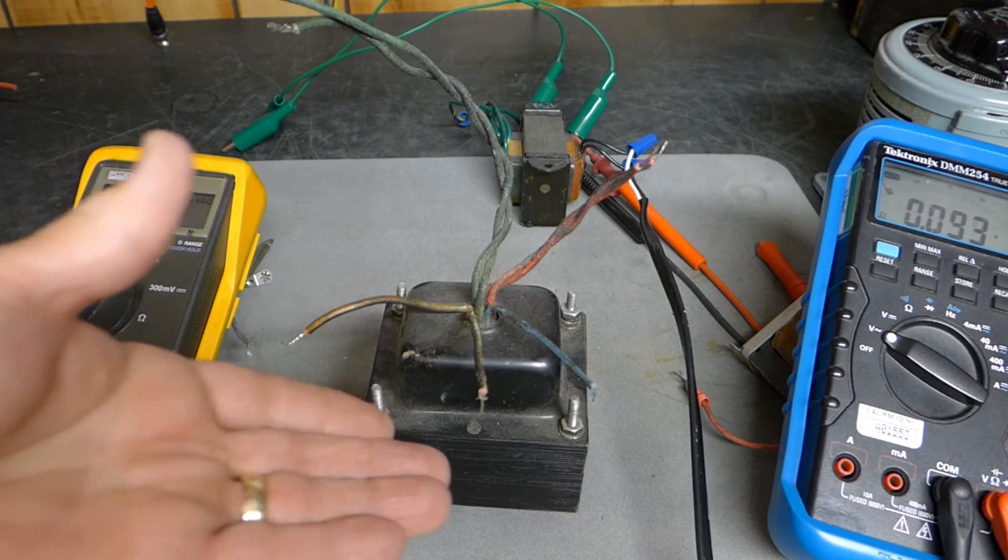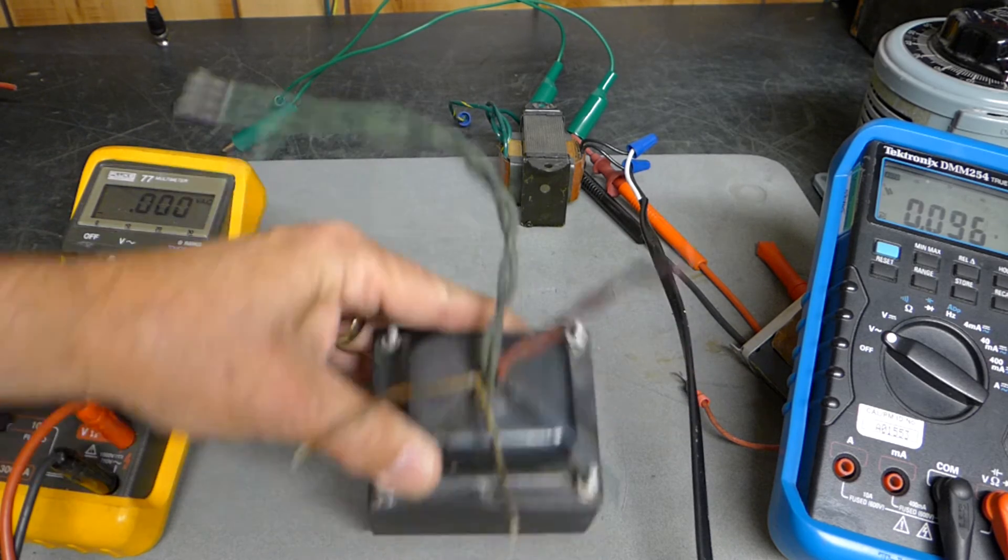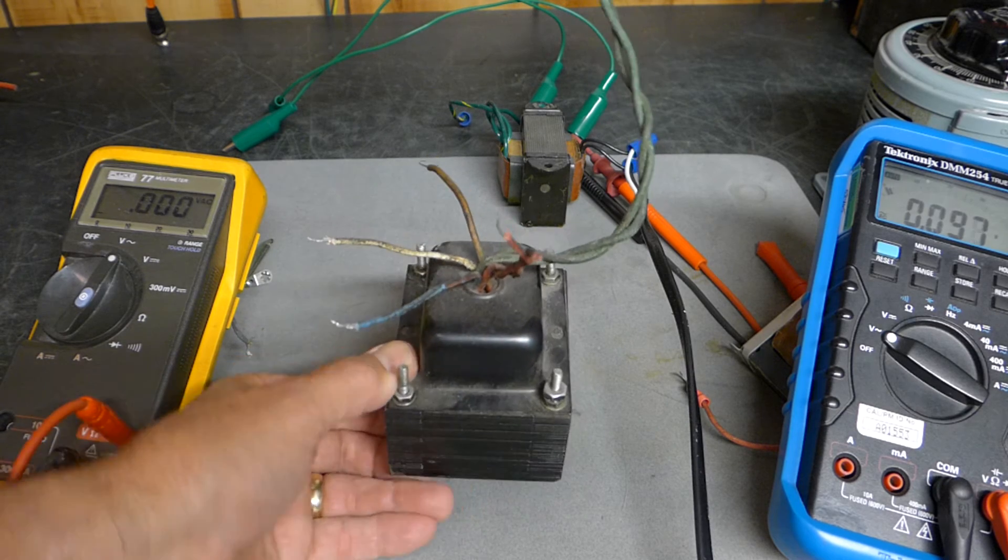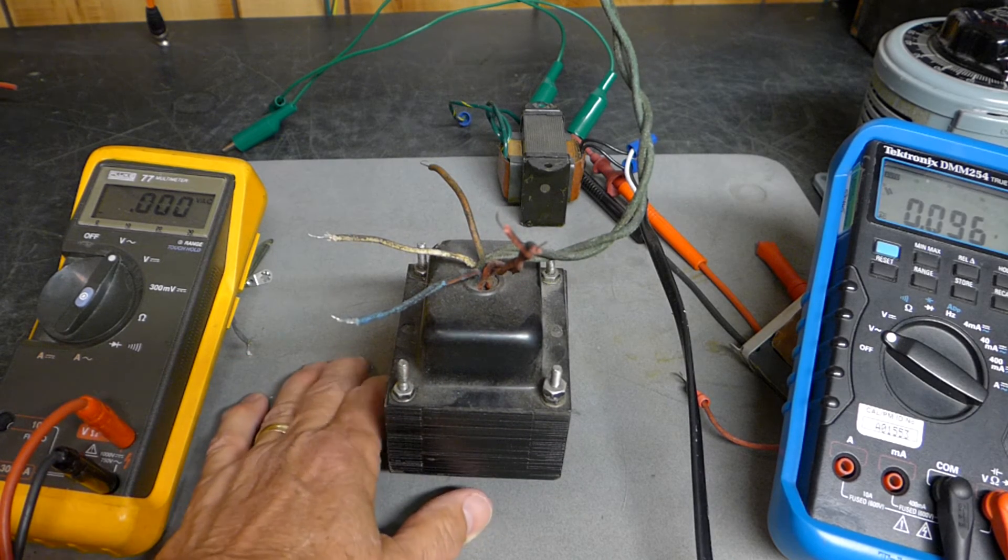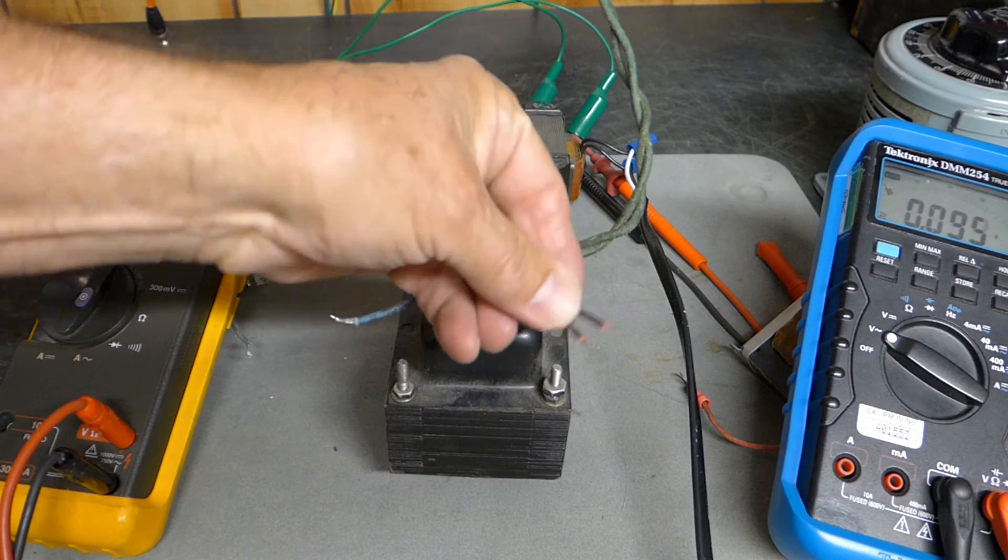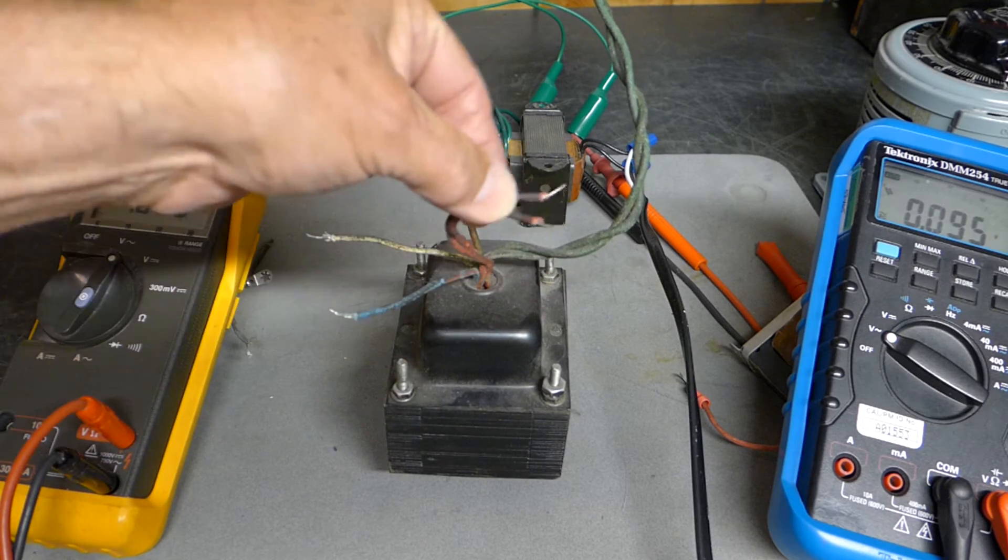So there you go - now you know that you might be able to use this transformer. This would actually be quite a good candidate for a 15 or 20-watt guitar amplifier. I'd put this into a bridge, and I'd get like 350 to 400 volts.